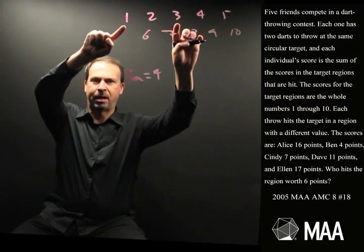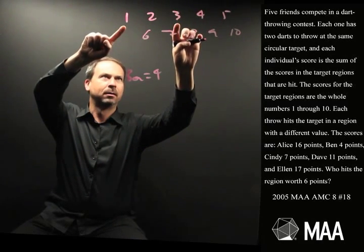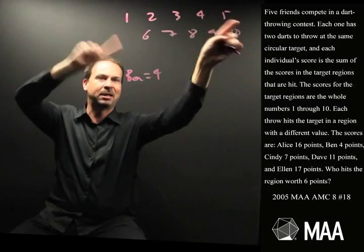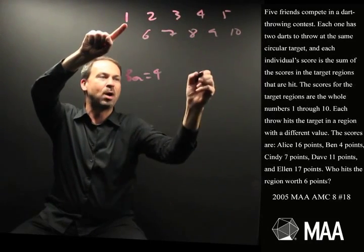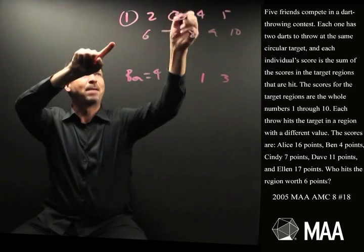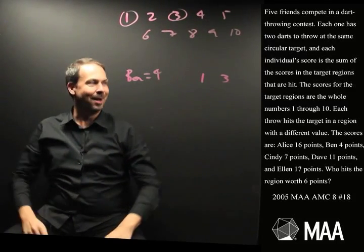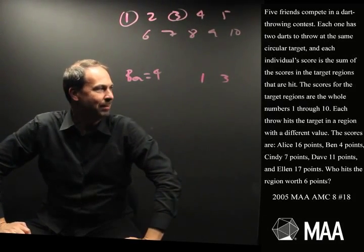How could he get 4 points? I've already said 1 and 3, but think about it. He couldn't get 2 and 2. He can't hit the same region twice. He was hitting two different numbers. He must have gotten a 1 and a 3. They're used up for Ben.